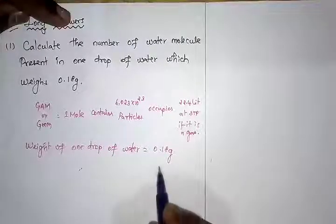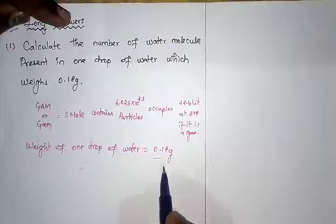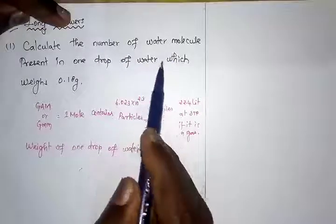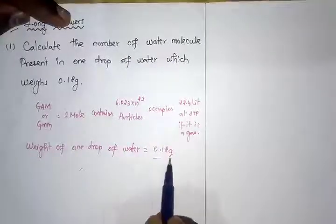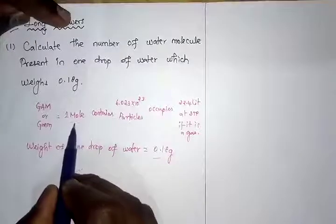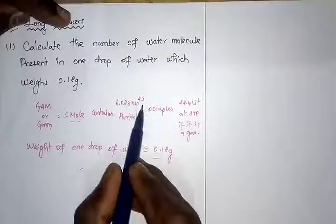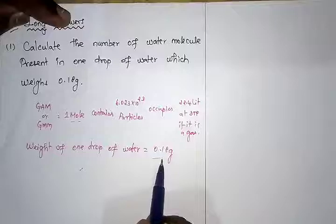Number of molecules - the given detail should be converted into moles, and then if you multiply with the Avogadro number we get the number of molecules. Very simple idea.